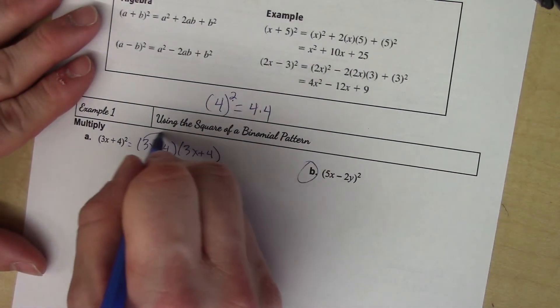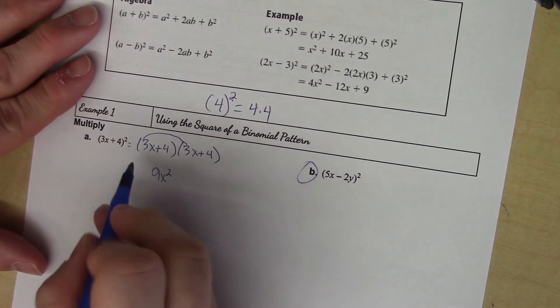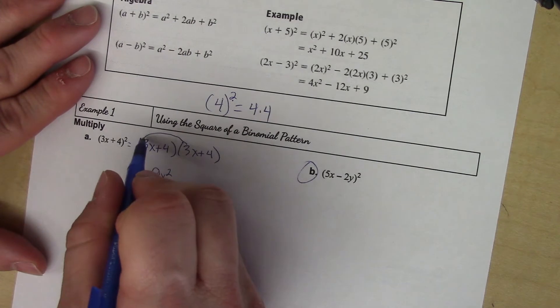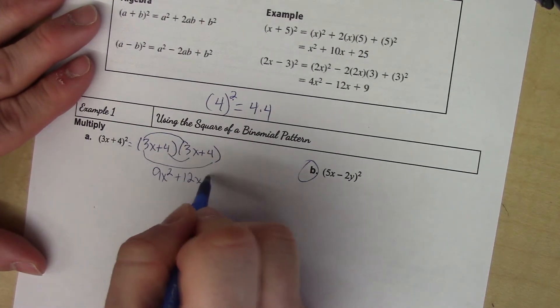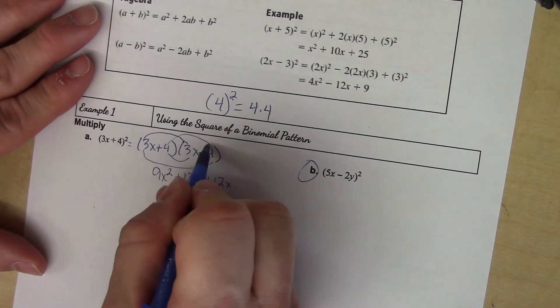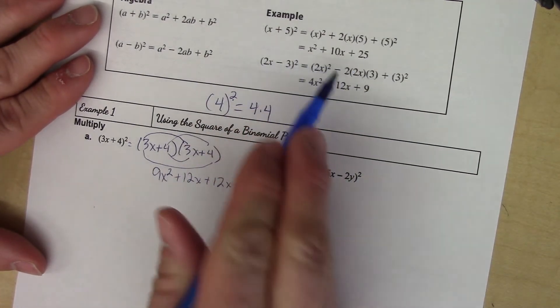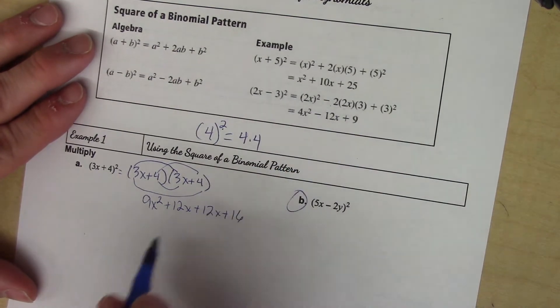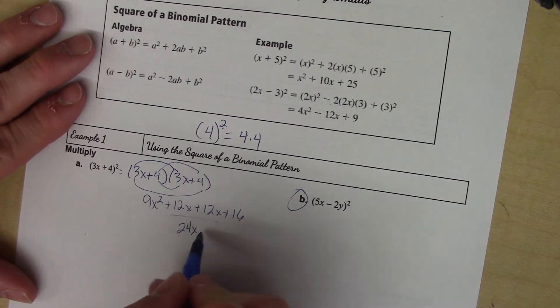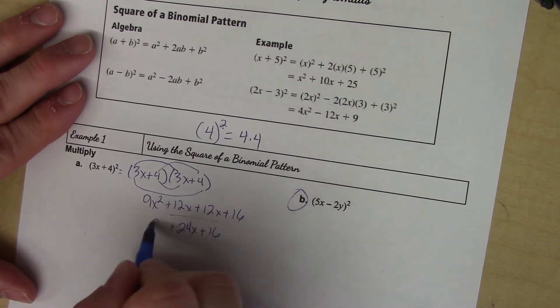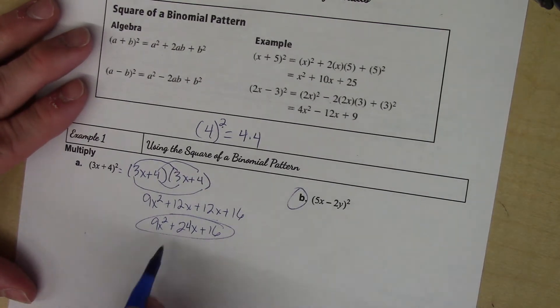Now we just get into what we did last section, which is just FOIL. First, I've got 3x times 3x, which is 9x². Outside I get +12x, inside I get +12x, and last I get +16. You can kind of see what they're trying to say up here - two times both terms multiplied together gives me two of these terms, which I can add together and get 24x. The final answer is 9x² + 24x + 16.